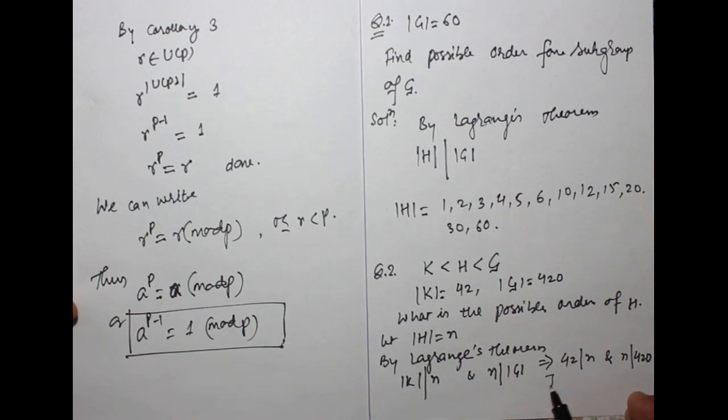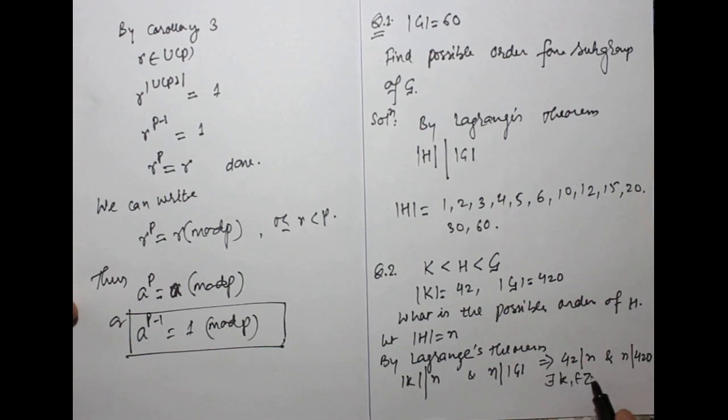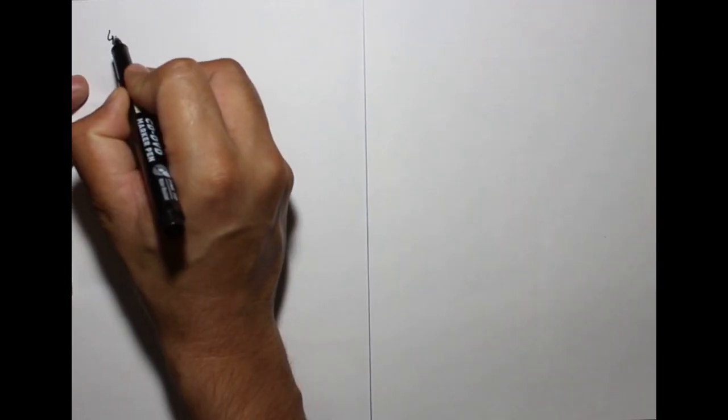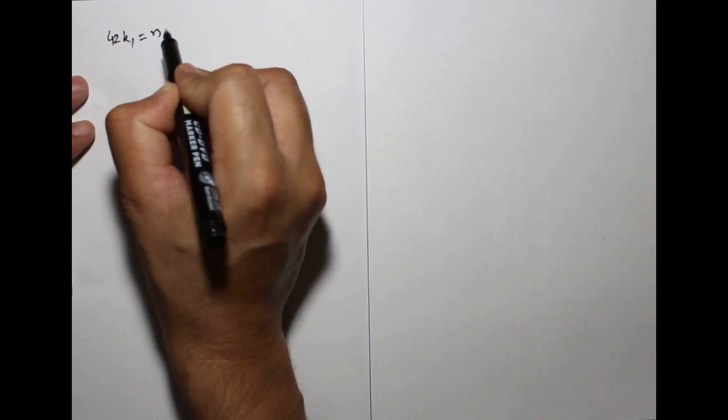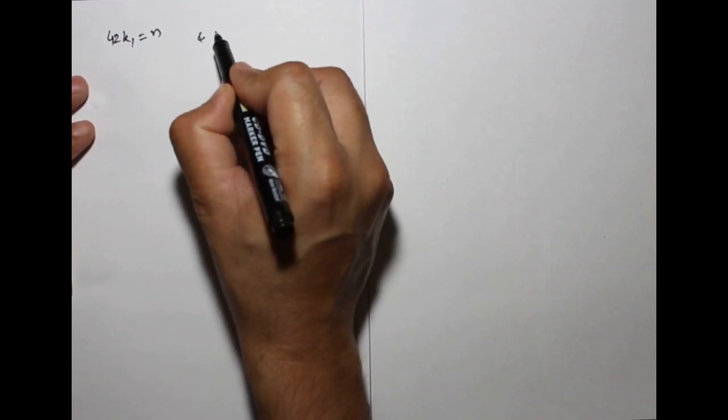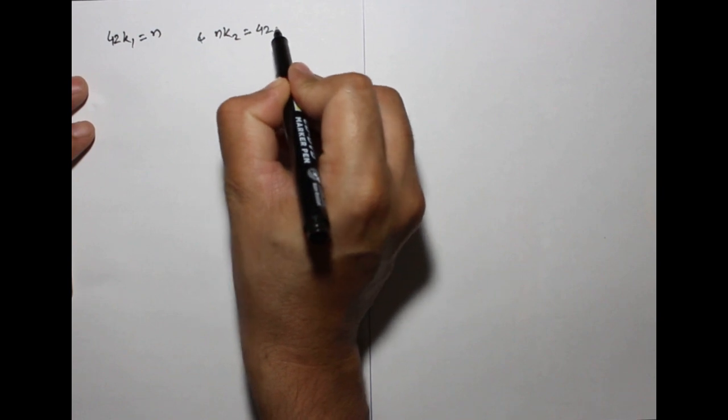This means there exists k1 belongs to Z, and k2 belongs to some integer Z, such that we can write 42 times k1 equals to n, and n times k2 equals to 420.